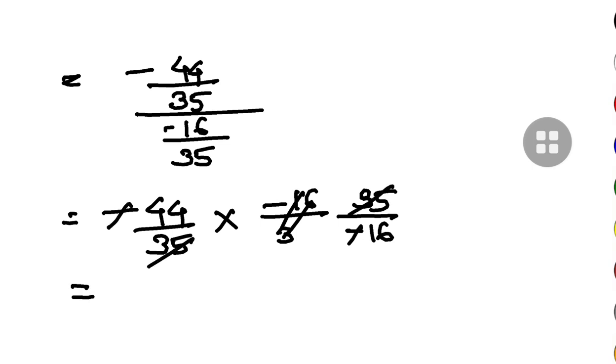35 and 35 cancel, minus minus cancel and 2 to 8 times, 2 to 22 times, 2 to 4 times, 2 to 11 times. So the final answer is 11 by 4. Rest of the questions you can attempt in the same process.